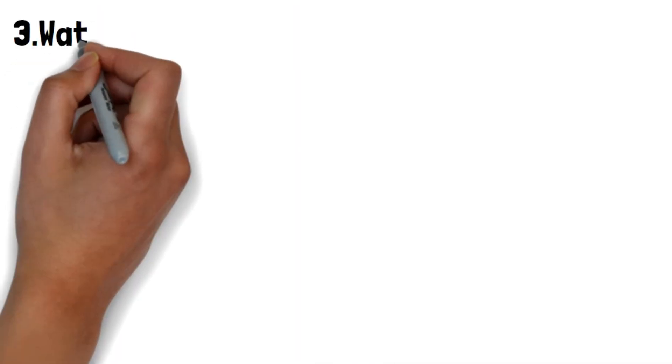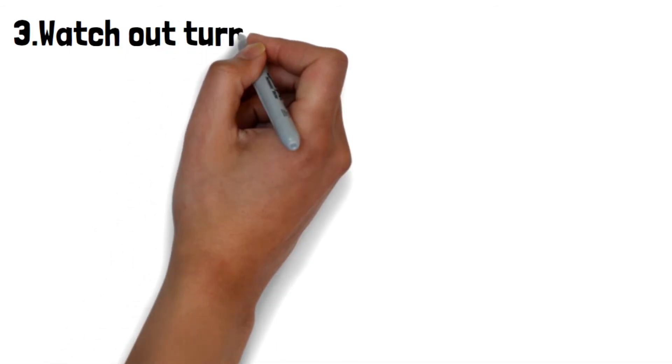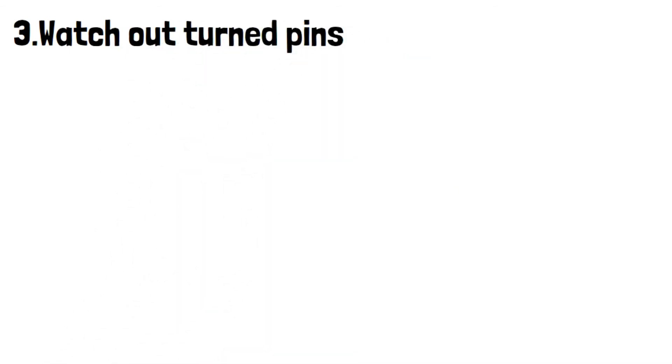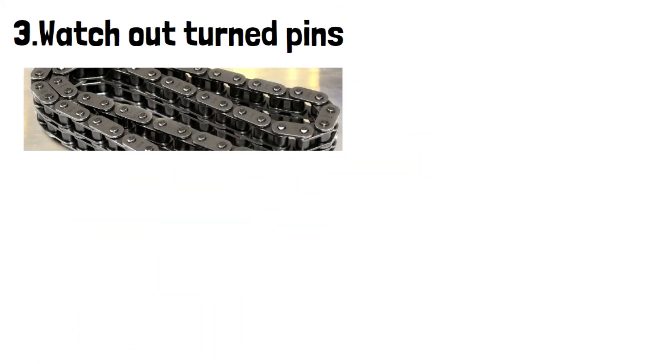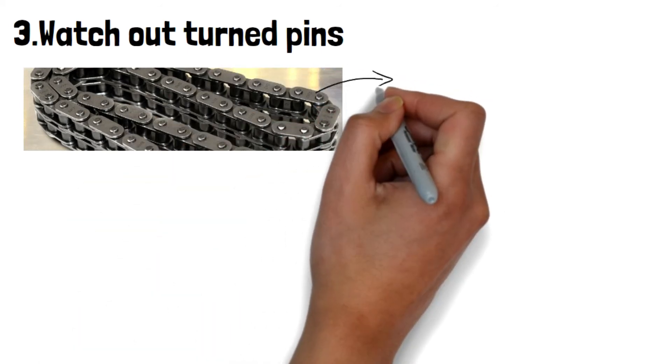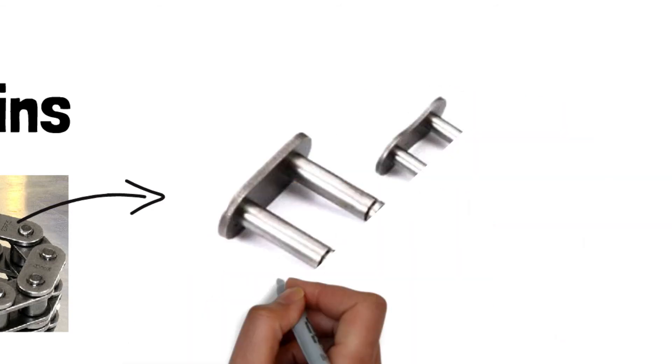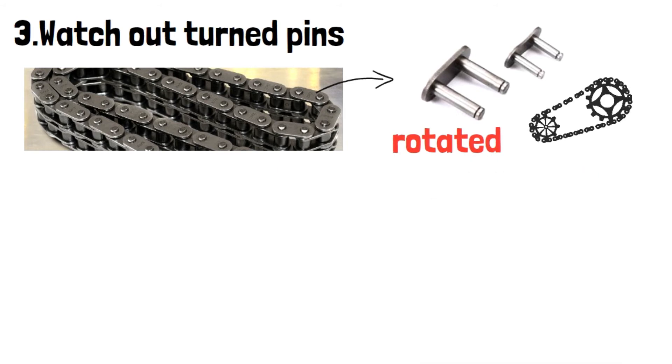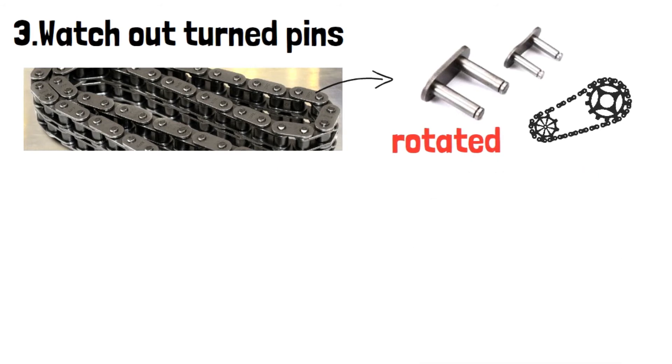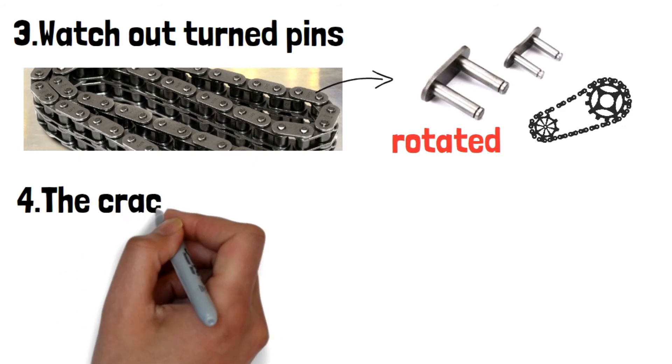On the contrary, let's see if there is any watch out turned pins. Visually inspect the direction of the pin. There should not be any rotation for the pin riveting on the chain. When the rotate pin shows up, I am sorry but the only way is to replace the whole chain.